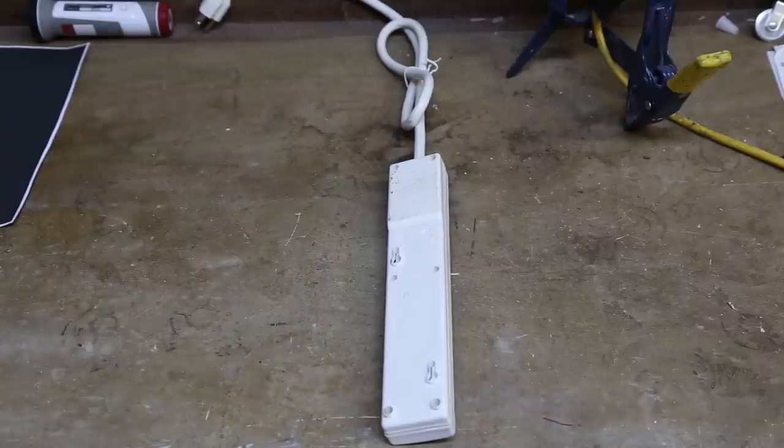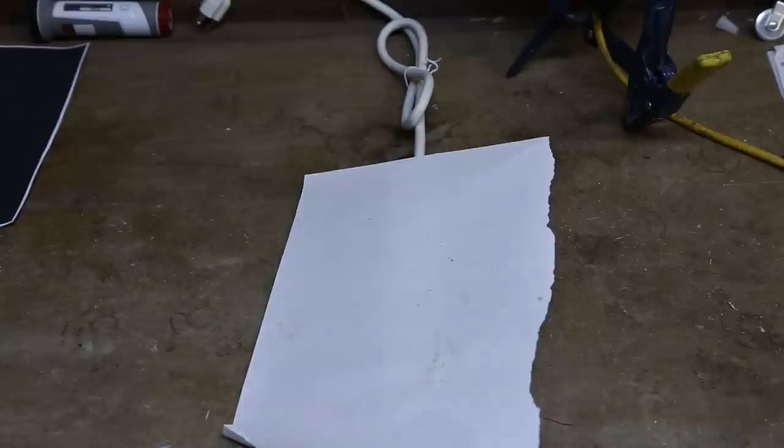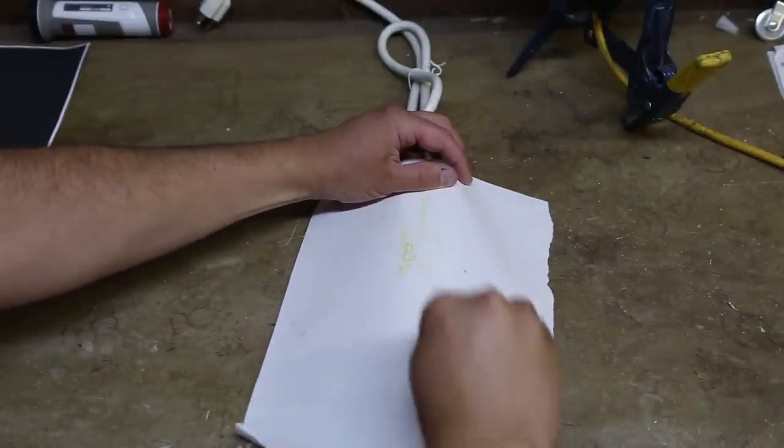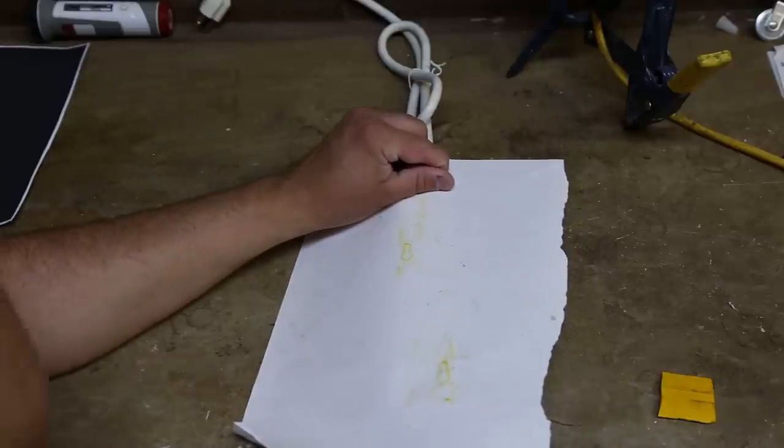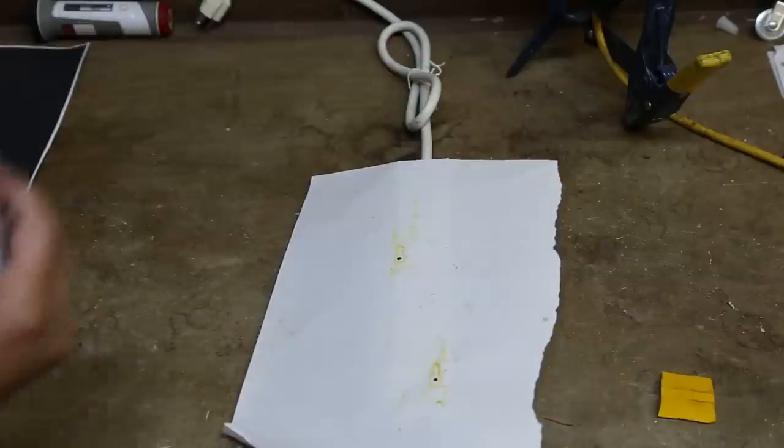If you don't have a copy machine, the other thing you can do is put any piece of paper and use any sort of pencil or tracing instrument to trace the back of the power strip plate and mark exactly where those holes are.